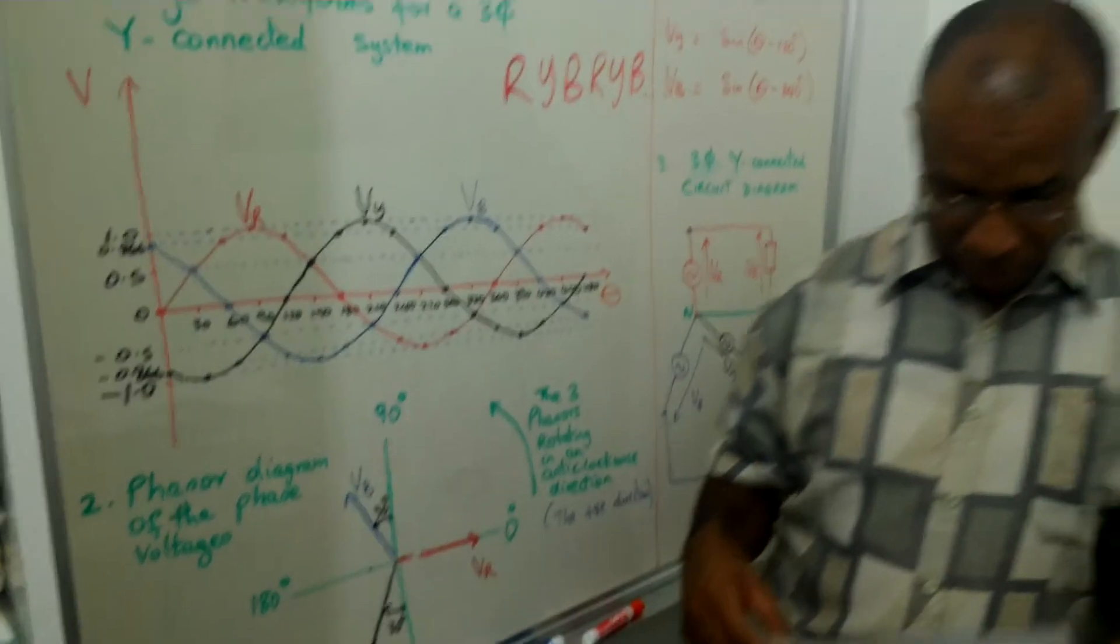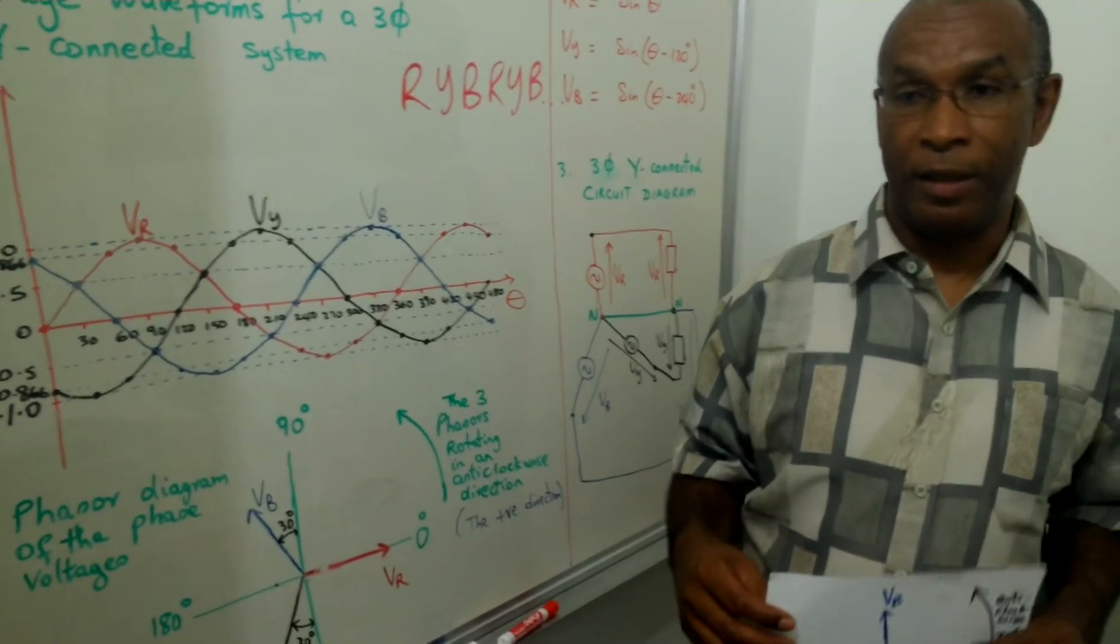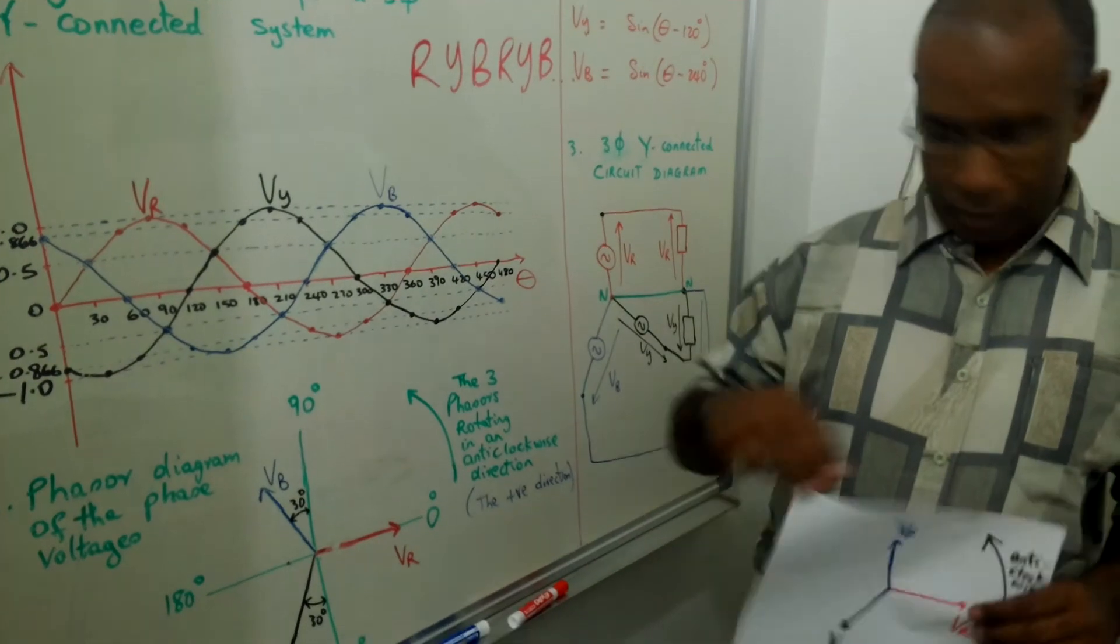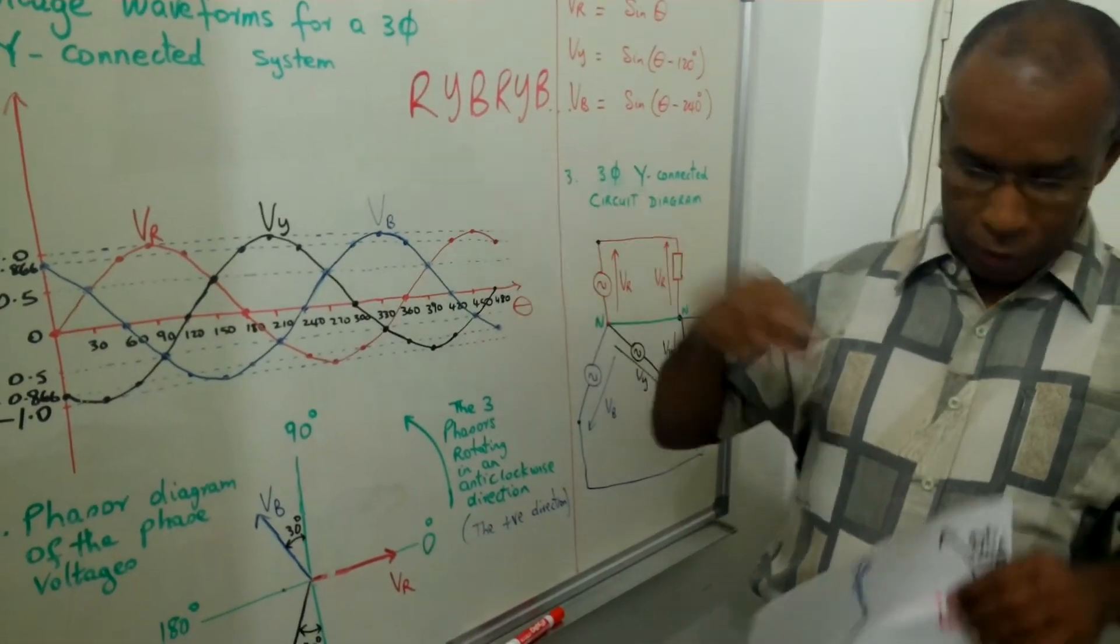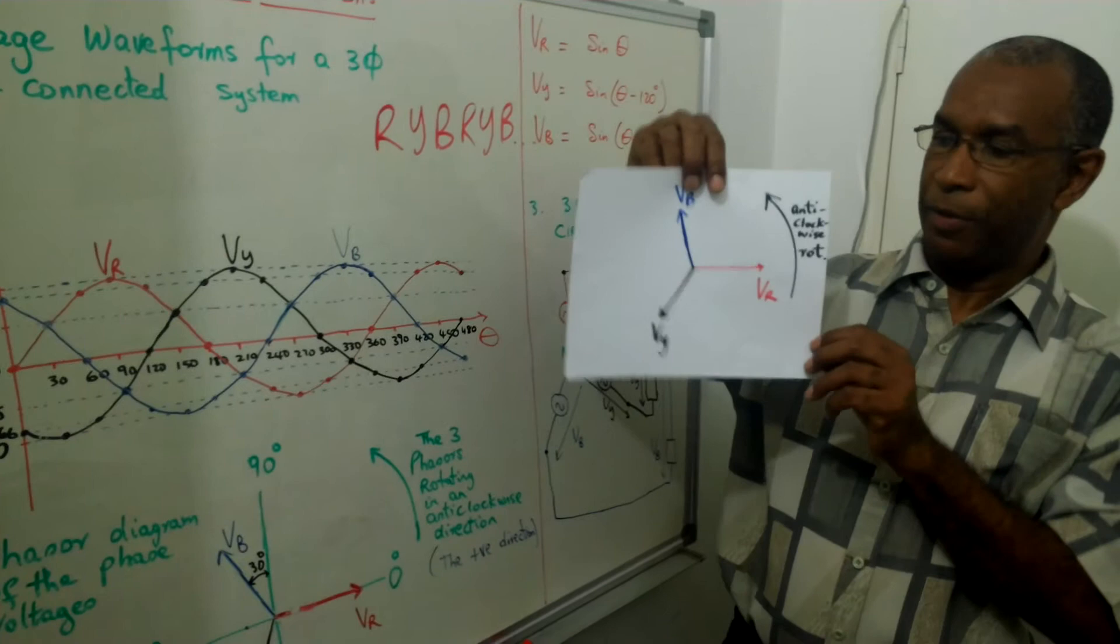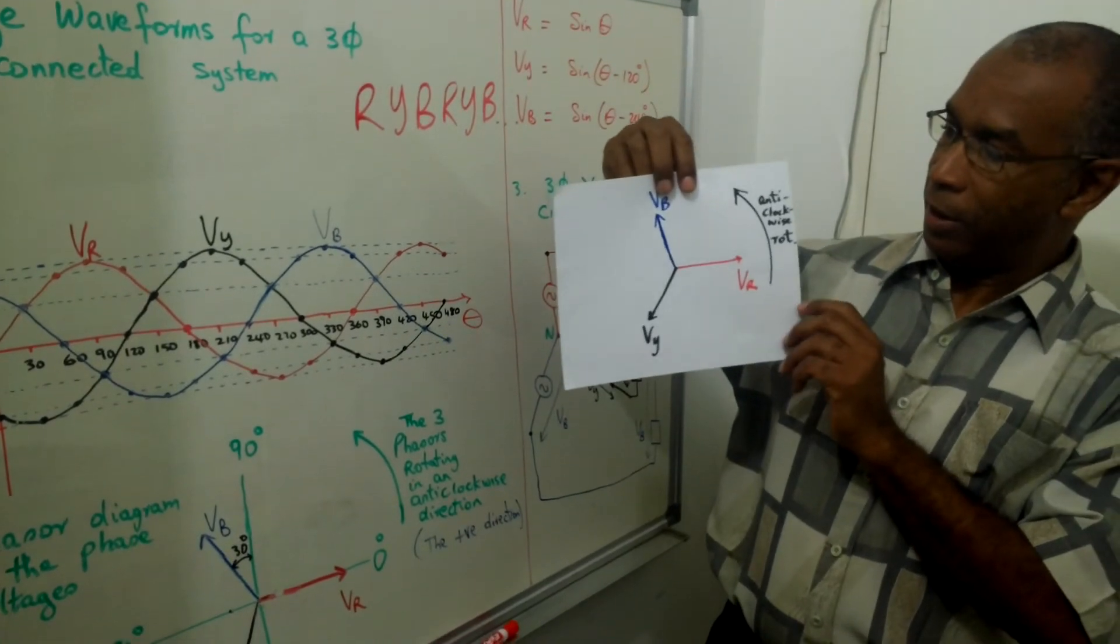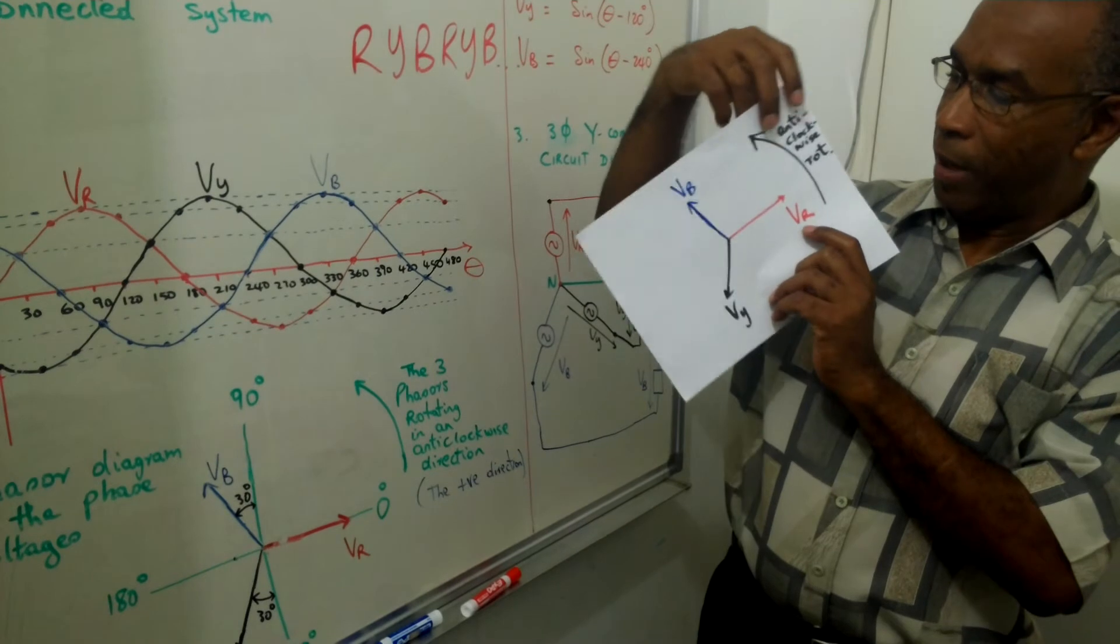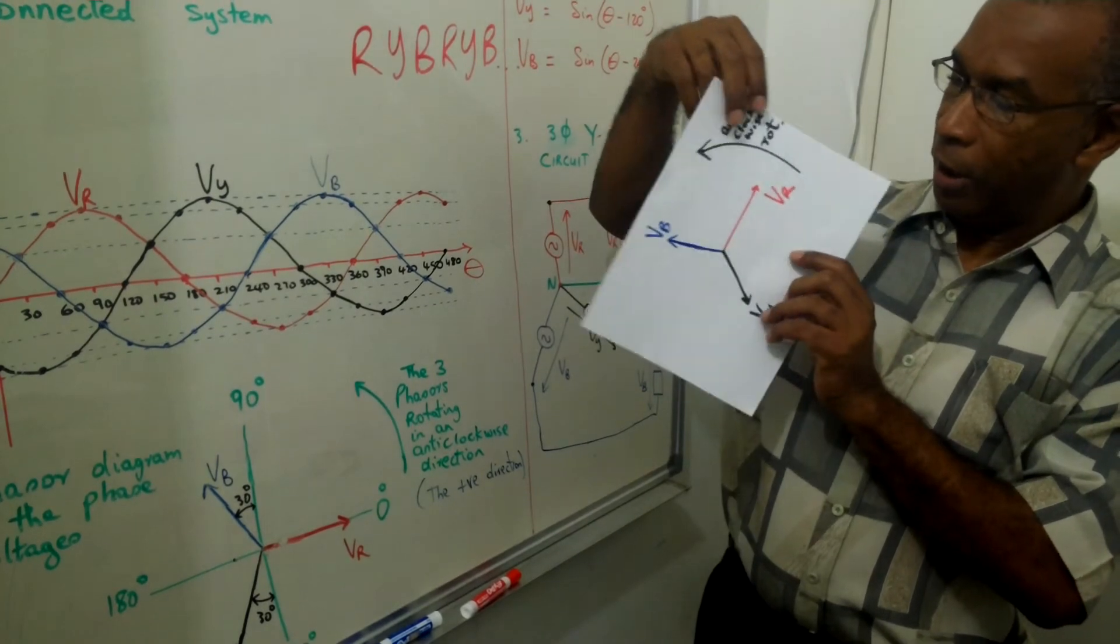And we say that all of them are rotating anti-clockwise in the sequence red, yellow, blue. Now you can see from this also that there is an anti-clockwise rotation. So you have to bear in mind that all phasors are rotating anti-clockwise.